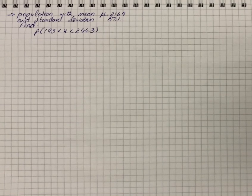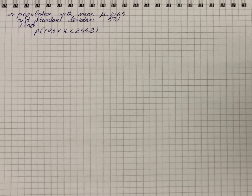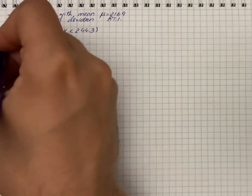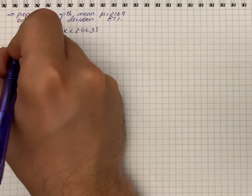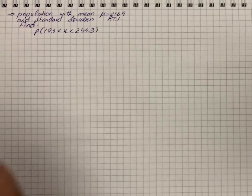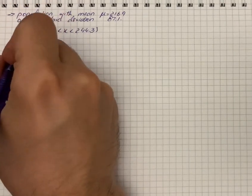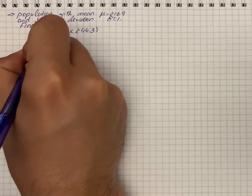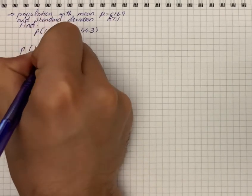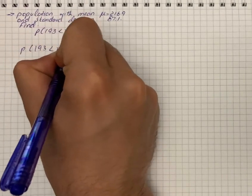We have a defined population with mean 216.9 and standard deviation 87.1. We can write P(193 < X < 244.3).